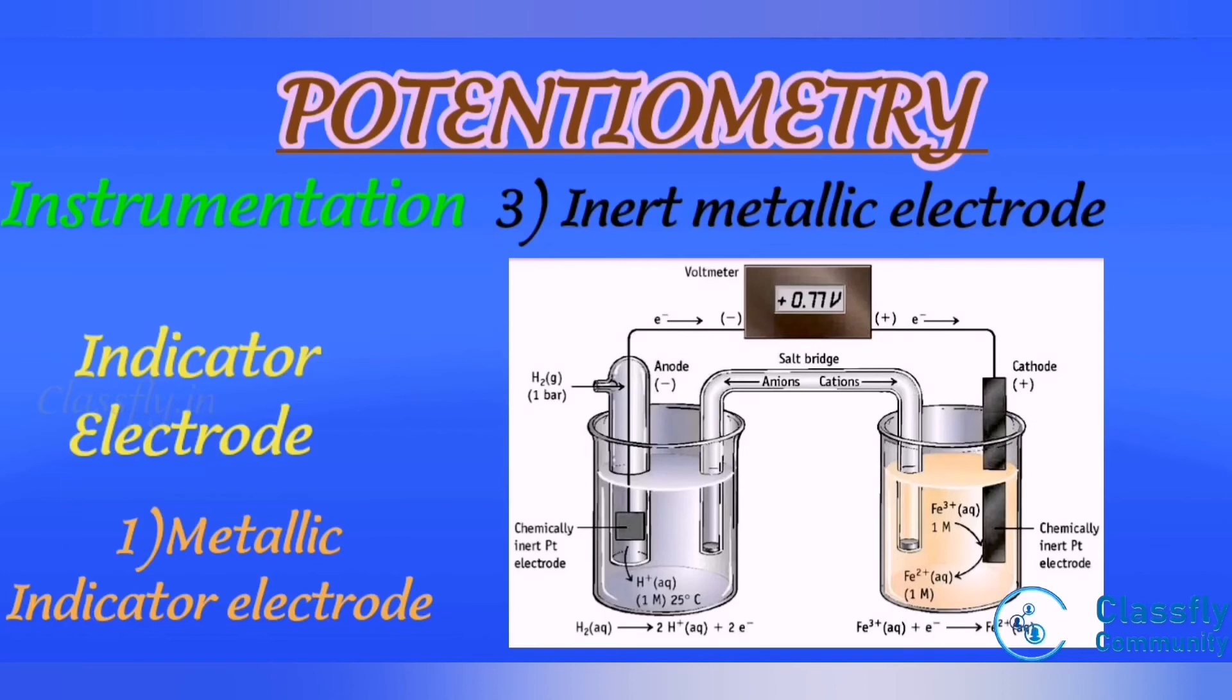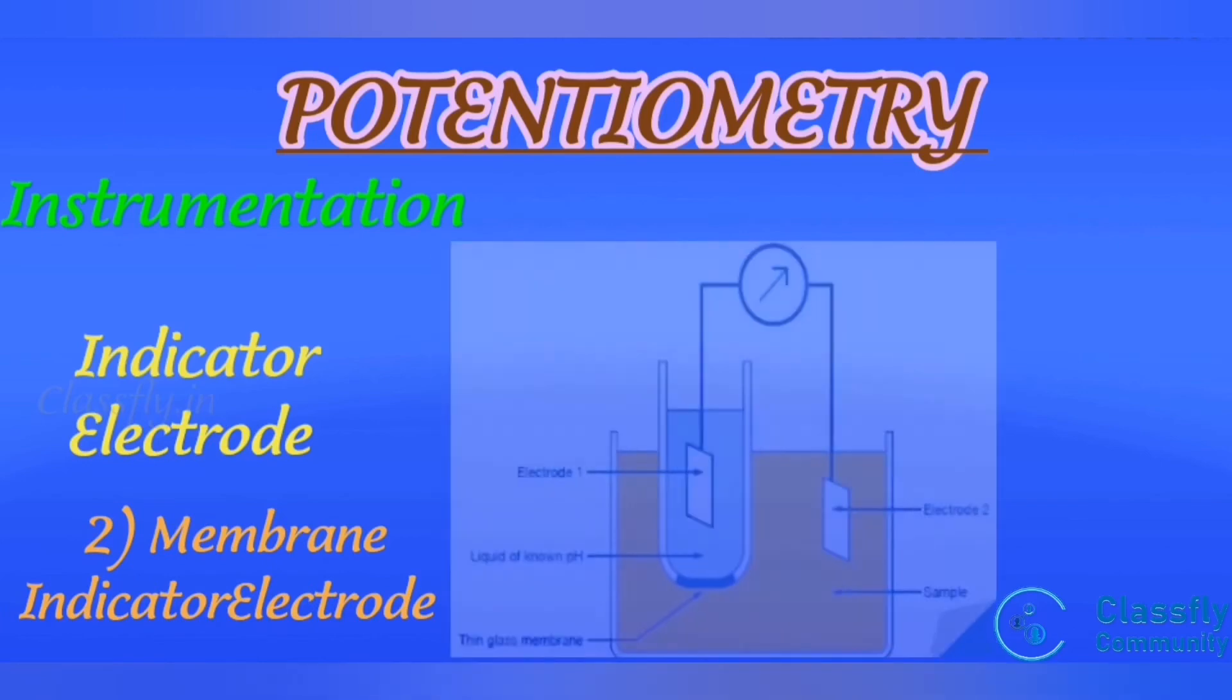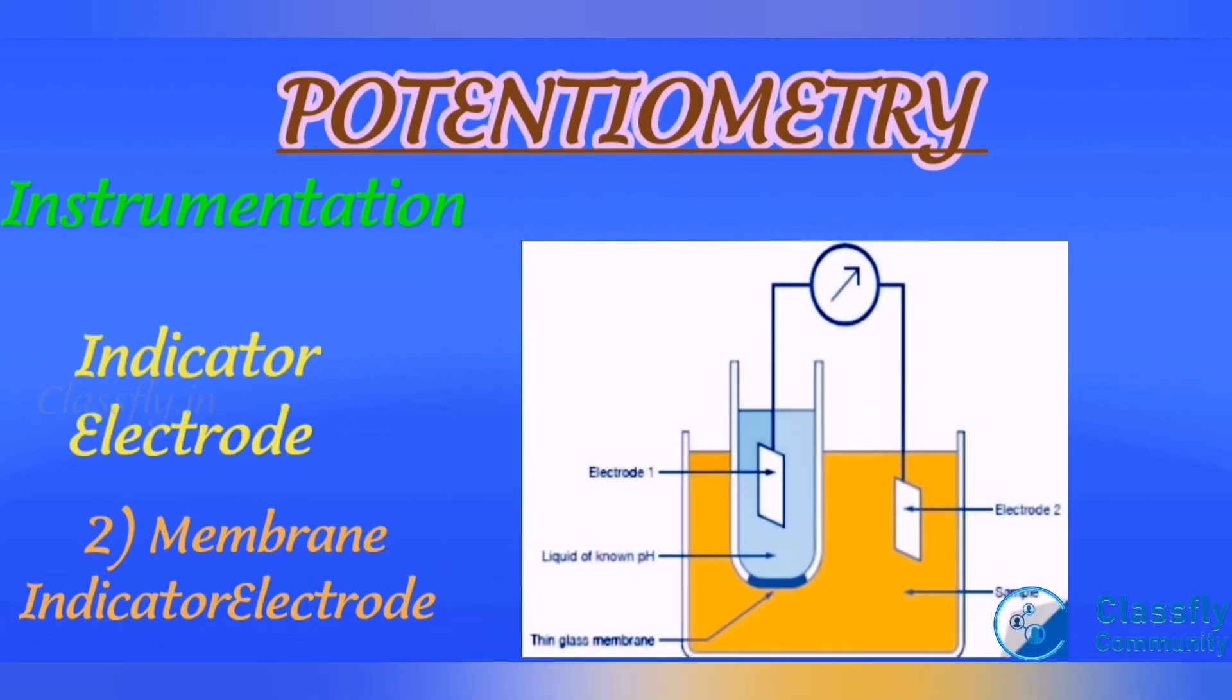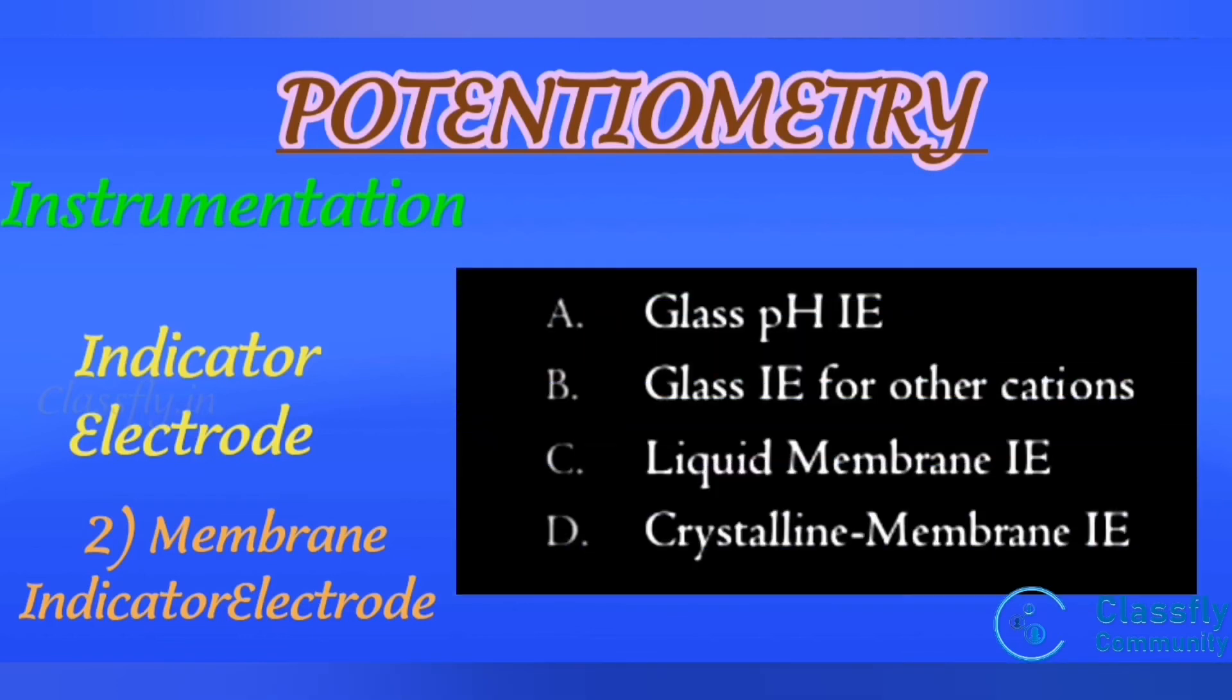Second category is membrane indicator electrode. It consists of a thin membrane separating two solutions of different ion concentration. The most common is pH glass electrode. It contains: first one, glass pH indicator electrode; second one, glass indicator electrode for other cations; third one, liquid membrane indicator electrode; and last one, crystalline membrane indicator electrode.